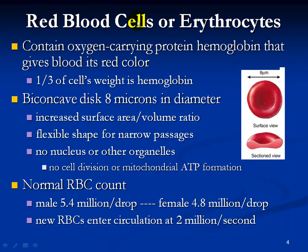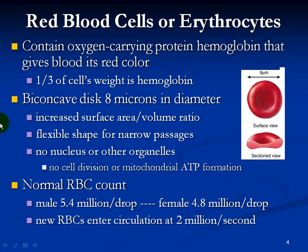Red blood cells, otherwise known as erythrocytes, contain the oxygen-carrying protein hemoglobin, which gives blood its red color — about a third of the cell's weight. These are biconcave discs, and the increased surface area to volume ratio provides a way to carry a lot more oxygen. They have a very flexible shape for narrow passages through capillaries, and they have no nucleus and no other organelles, so they can't do cellular division or mitochondrial ATP formation. They just carry oxygen and carbon dioxide.